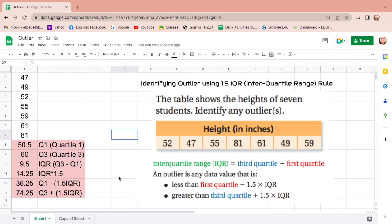And this time, let us find if there are outliers, or any value that is less than first quartile minus 1.5 times IQR, and that is 36.25. Let me highlight so you would know. In the dataset, are there numbers less than 36.25? There is none.